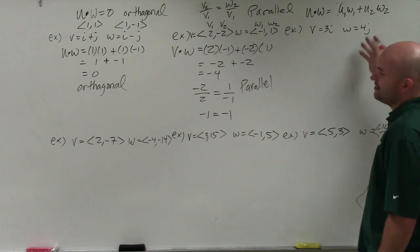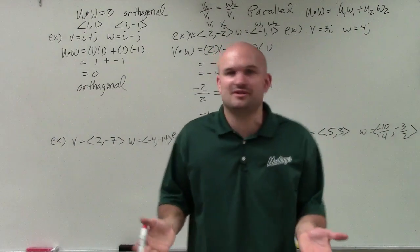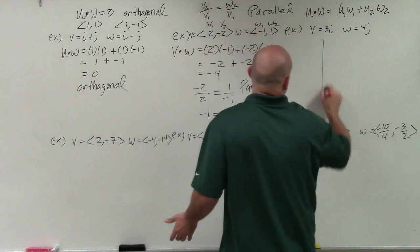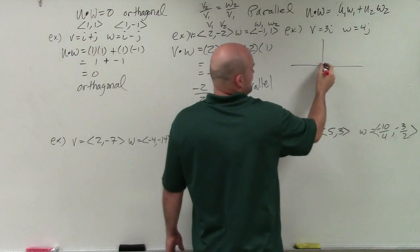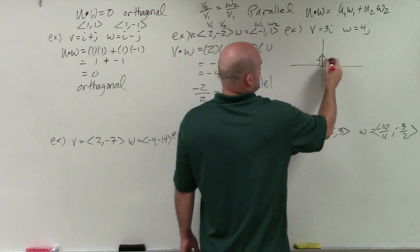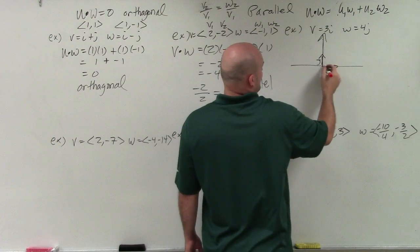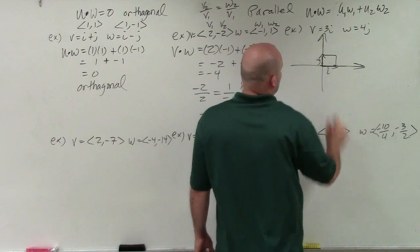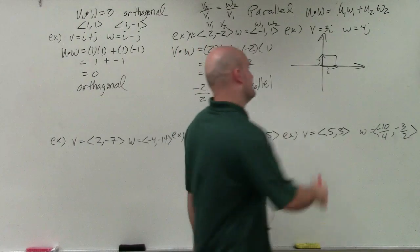The next example. Now, again, in this one, you could apply the operation if you want to. But let's just sketch it. If you have 4j, remember, here's your unit vector i, here's your unit vector j. So 4j goes up here, 3i goes right here. Yes, we obviously know that those are going to be orthogonal.